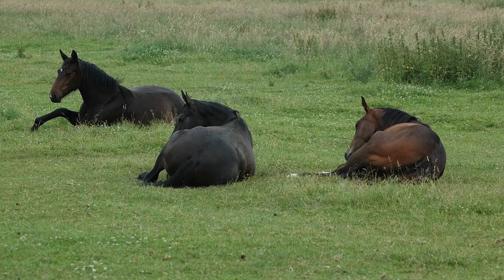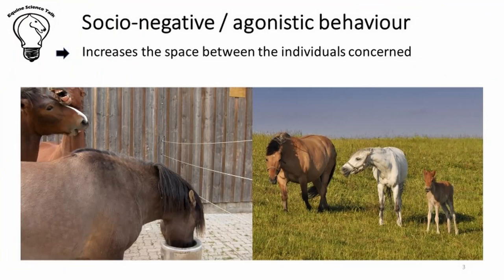On the other hand, there are also socio-negative or agonistic behaviors. These have the goal of increasing the space between individuals and arise as individuals defend themselves or their resources. These agonistic behaviors include threats — in the photo on the left, the horse in the foreground has its ears pinned back as it defends its place at the water, while in the photo on the right the gray mare is defending her foal by threatening the dun horse. There are also bites and threats to bite, and kicks and threats to kick.